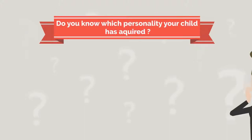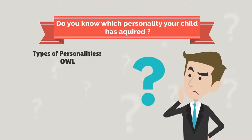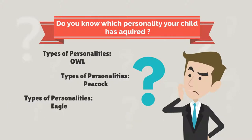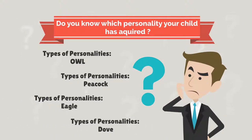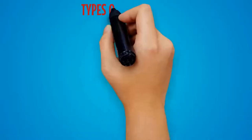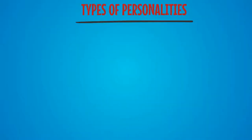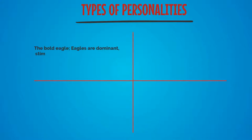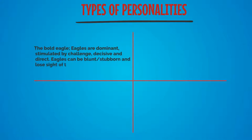There are four types of personalities your child may have. The Eagle is dominant, stimulated by challenge, decisive and direct. Eagles can be blunt, stubborn, and lose sight of the big picture, and can become insensitive to other people's needs. Eagles are natural achievers.